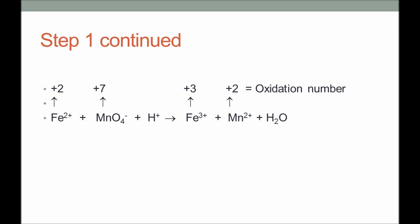To determine oxidation numbers, you may refer to my earlier video on how to assign oxidation numbers. Whenever there is an increase in oxidation number, the reaction is considered to be oxidation. Fe²⁺ changes to Fe³⁺, so this is an oxidation half-reaction. One electron is lost from Fe²⁺ to change into Fe³⁺.